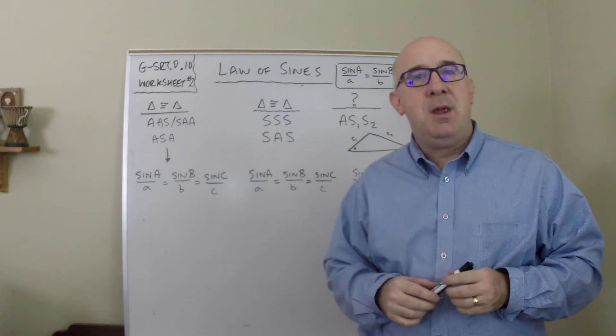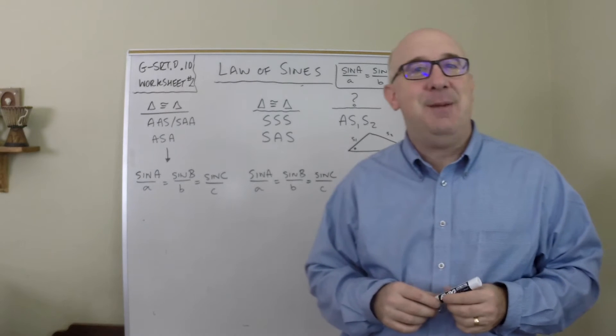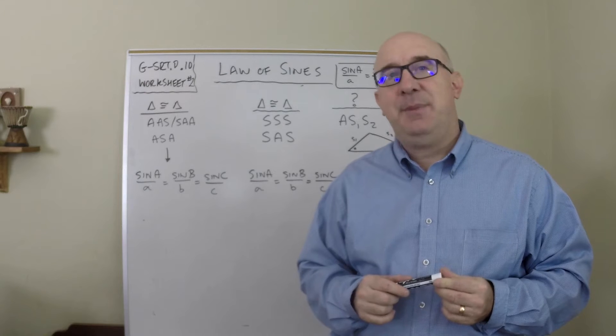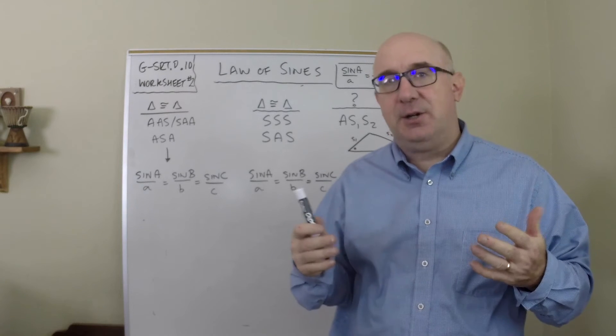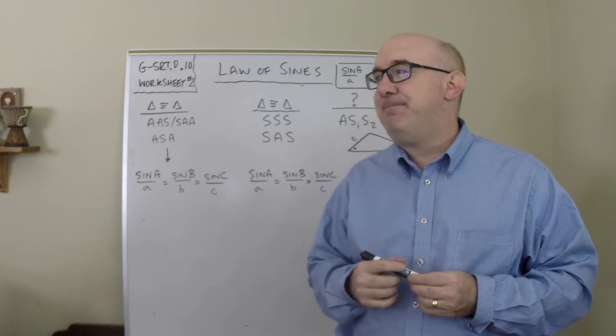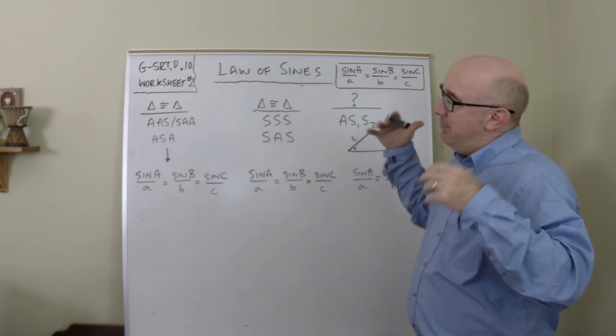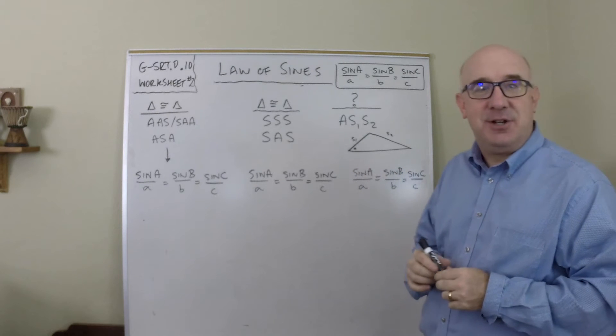I'm going to do my best to explain what is called the ambiguous case of the Law of Sines. Ambiguous means the unclear or the one that may exist—unclear and ambiguous are kind of synonymous.